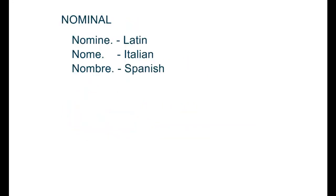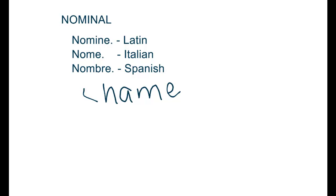Nominal variables simply name the different categories constituting them. This term comes from Latin 'nomine', Italian 'nome', or Spanish 'nombre', which actually means nothing else but 'name.' This type of variable simply distinguishes different kinds of people or things. Gender is a good example because it's made of men, women, and nowadays other. Political party is made of democrats, republicans, and independents. Religious affiliation distinguishes protestants, catholic, jews, muslims, and so forth. And then we have also whether a person has been arrested or not — yes or no. That's only naming these categories.